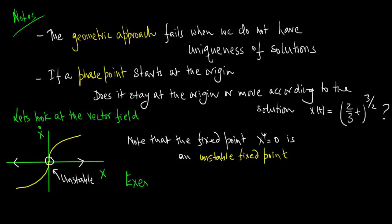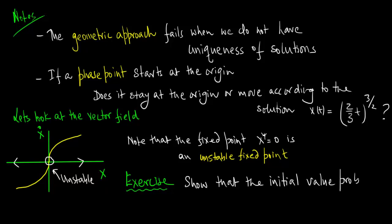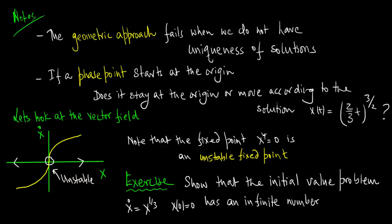Let us set out a much more challenging exercise for you. Can you go ahead and show that the initial value problem x dot is equal to x to the third, where x of 0 is equal to 0, actually has an infinite number of solutions?